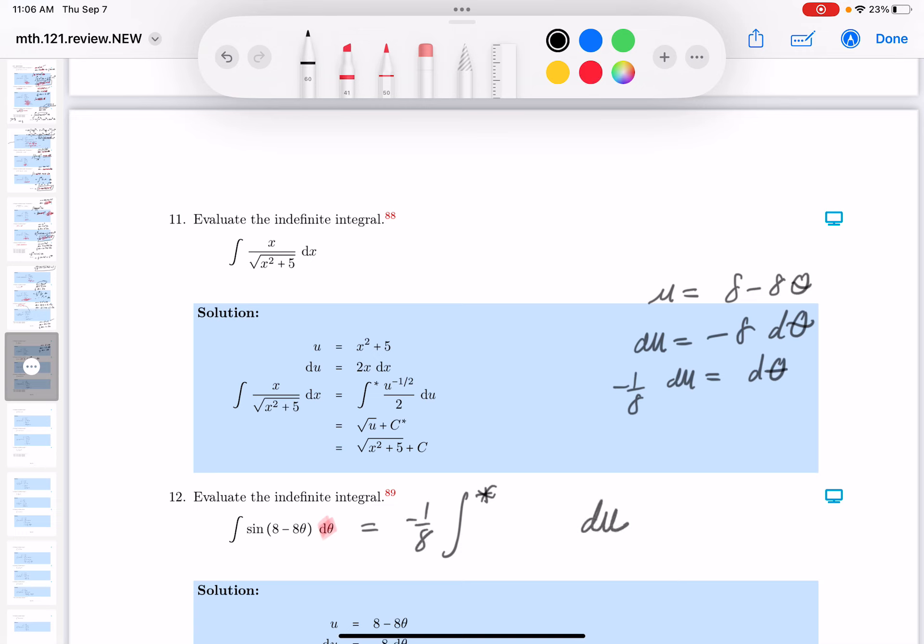I'm looking at the sine of that argument, which is 8 minus 8 theta, so it's really just the sine of U.